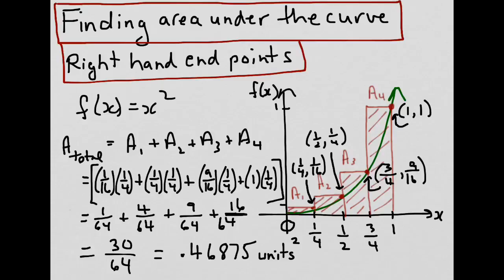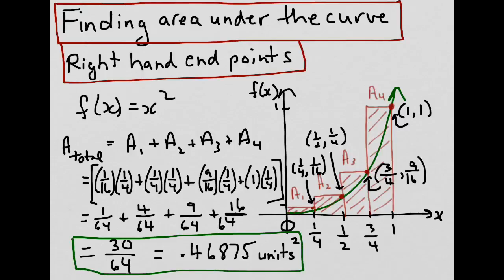In the end, using the right-hand endpoints, our approximation for the area under the curve is 0.46875 units squared. By looking at the graph, we can see that this approximation is greater than the actual area under the curve. If we wanted a better approximation, we would increase the number of subintervals so that the width would be smaller — eventually, we're looking for the width limit approaching 0 to get a much better approximation of the area under the curve.